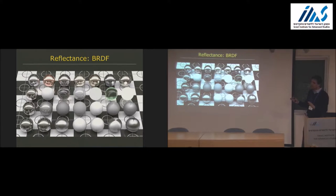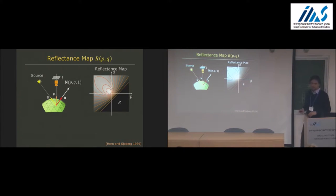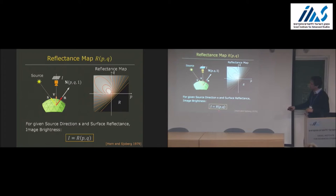As Takeo mentioned, it was really Horn, BKP Horn, who brought all of this to the vision domain. This is work by Horn and Sjoberg, the concept of reflectance map. The reflectance map was a representation particularly designed for vision. What Horn and Sjoberg were saying is that if you give me the material properties of a surface and tell me where the light source is, then I can create a map R that takes you from brightness to the orientation of the surface. So you give me a brightness 0.7, I plug it in, and it might lie on an iso-brightness contour.